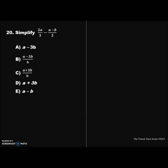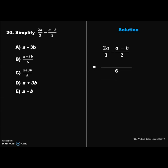Question 20. Simplify: 2a/3 − (a − b)/2. Solution: Here is our expression: 2a/3 − (a − b)/2. We need to find the lowest common multiple (LCM) of 3 and 2, which is 6. Now 6 ÷ 3 = 2, and 2 × 2a = 4a. Again 6 ÷ 2 = 3, so we have 4a...